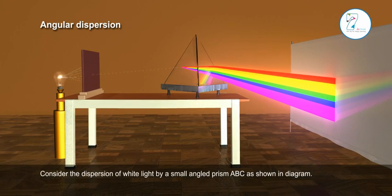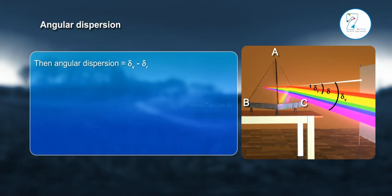Consider the dispersion of white light by a small angled prism ABC as shown in diagram. Then, angular dispersion = δᵥ - δᵣ.